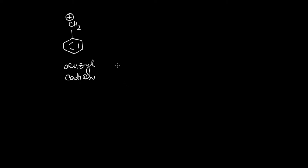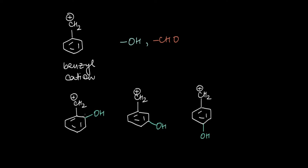In this video we are going to see how the stability of a benzyl cation changes. If I have a benzene ring with a CH2 attached, this is what we call a benzyl group. I want to see how the stability of a benzyl cation changes if I add different functional groups like an OH group or an aldehyde group to different positions of this benzyl cation.